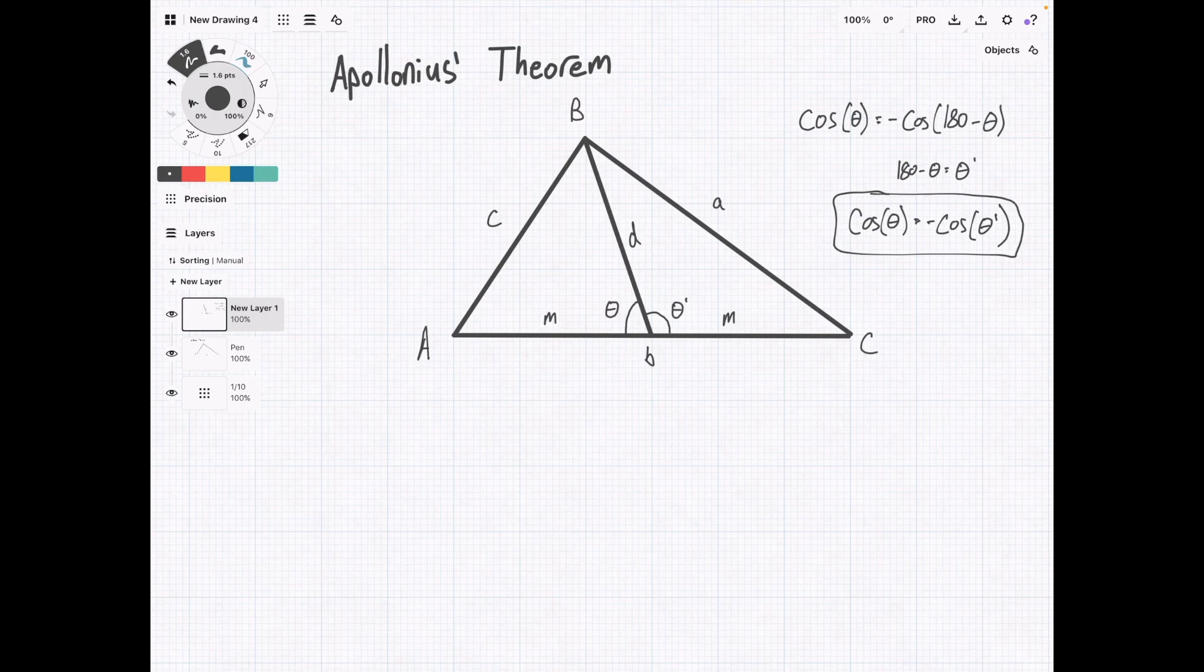Now what we're going to do is we're going to use the law of cosines to find this side, c. So that's going to be c squared equals m squared plus d squared minus 2md cosine of theta.